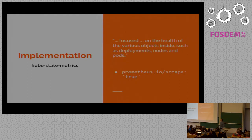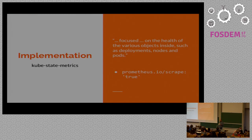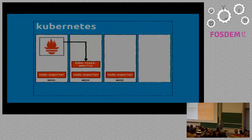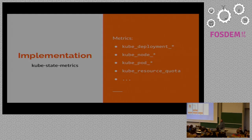A third component is kube-state-metrics, a project I found in the Kubernetes ecosystem. This one is focused on the health of the Kubernetes API objects — not the cAdvisor metrics that Prometheus already scrapes. It exposes metrics like deployment health, node health, and pod health — focused on all the internals of a Kubernetes or OpenShift deployment. Here as well, I set the annotation scrape true so that it gets discovered automatically. It's deployed as a pod and gets automatically discovered.